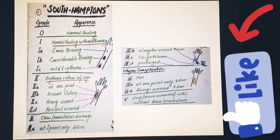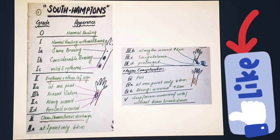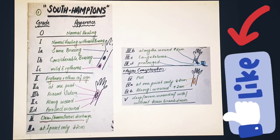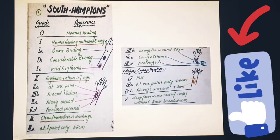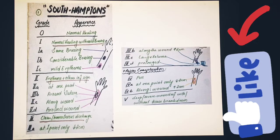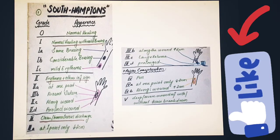Major complications start from grade four onwards, where pus is present. Grade 4a indicates pus at one point less than two centimeters, grade 4b indicates pus along the wound more than two centimeters. Grade five is deep severe wound infection with or without tissue breakdown.